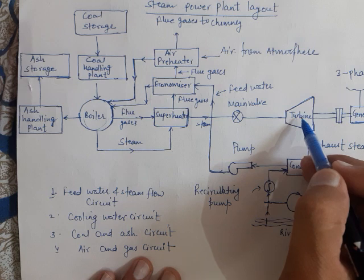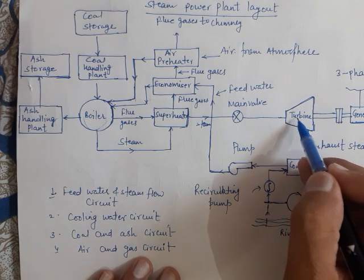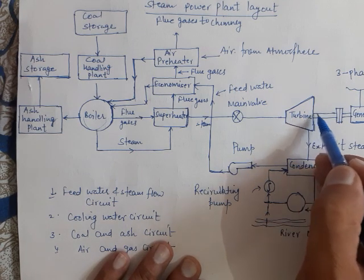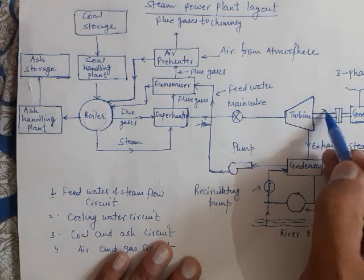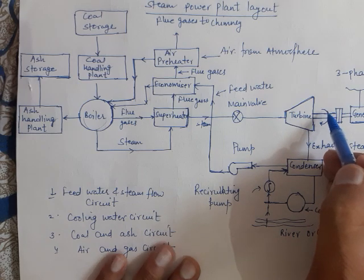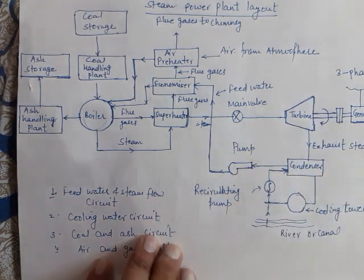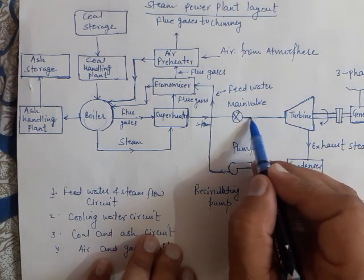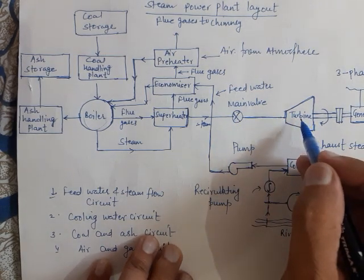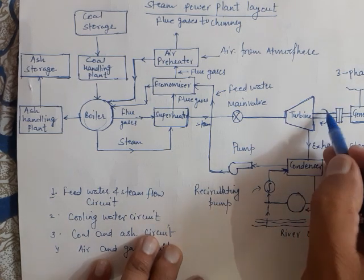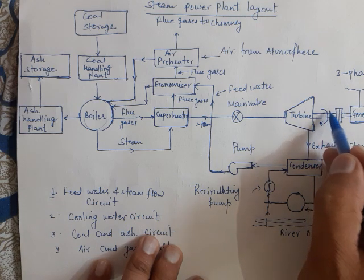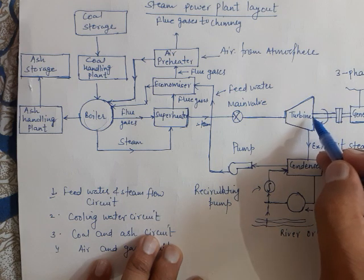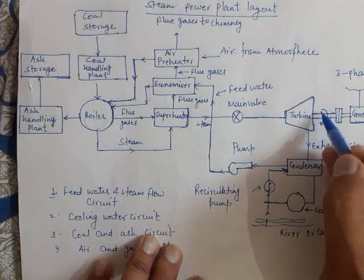The turbine consists of a set of nozzles and moving vanes, or a rotor. The expansion of steam takes place in the turbine — the pressure of the steam drops — and this expansion causes rotation of the shaft of the turbine. The shaft rotates as a result of steam expansion.